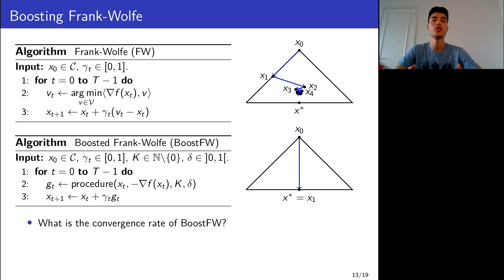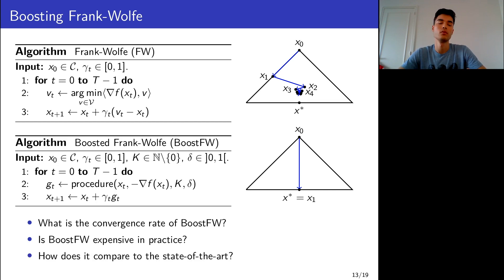So in general, what is the convergence rate of Boosted Frank-Wolfe? I've mentioned that this procedure requires many rounds of alignments and each round is a linear minimization. So does that mean that the Boosted Frank-Wolfe algorithm is too expensive to be used in practice? And how does it compare to the state-of-the-art?